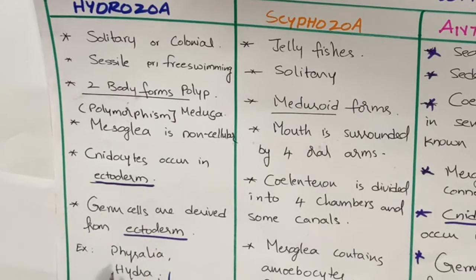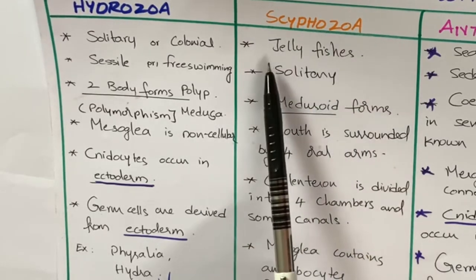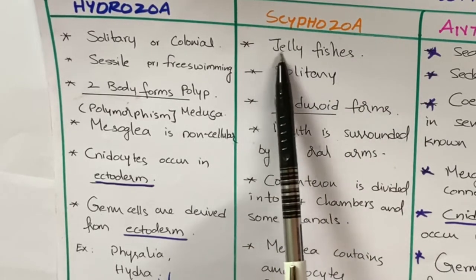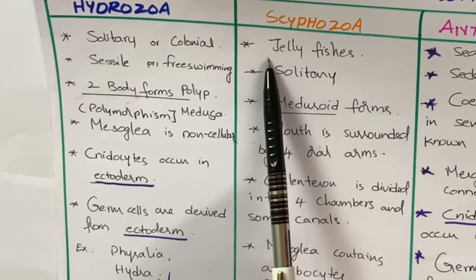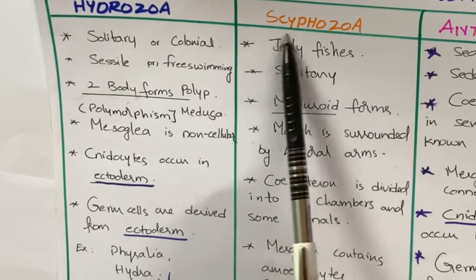Those are some of the important characters of Hydrozoa. Examples for Hydrozoa are Physalia, Hydra, and Obelia.